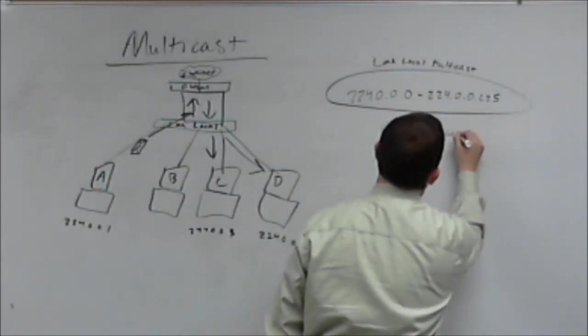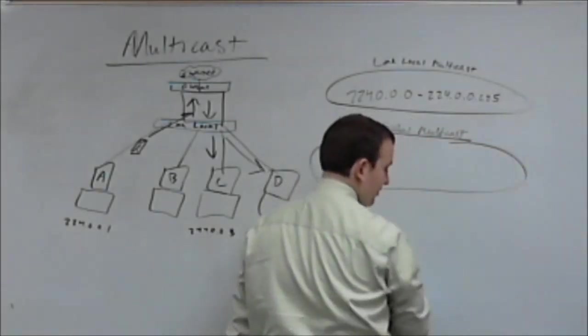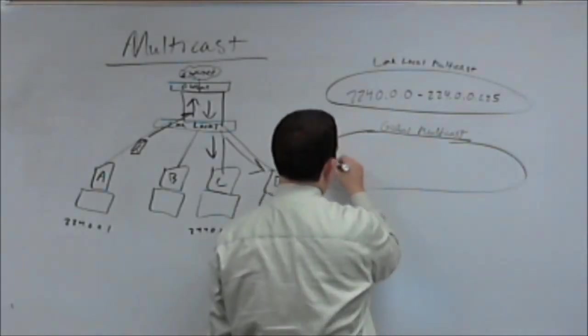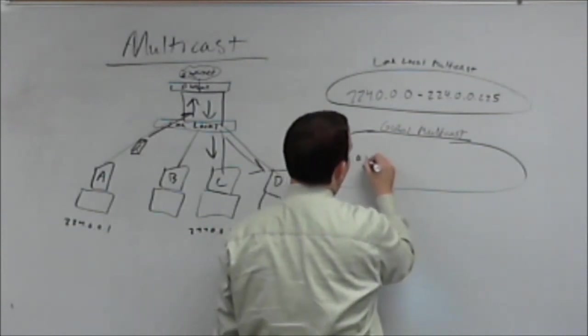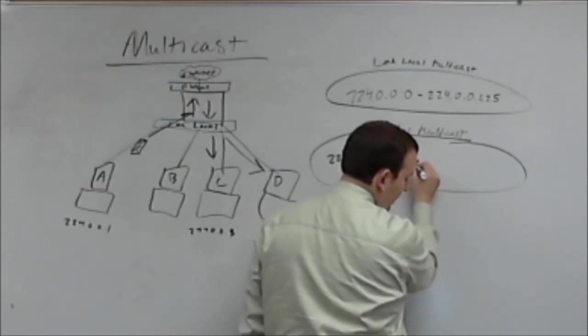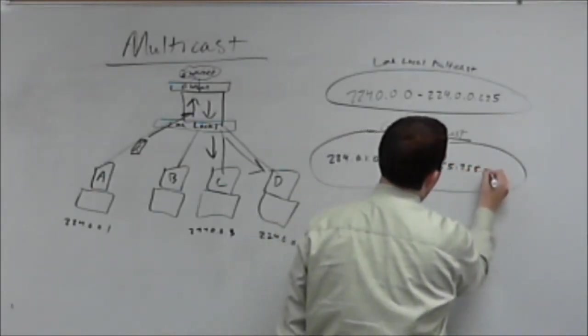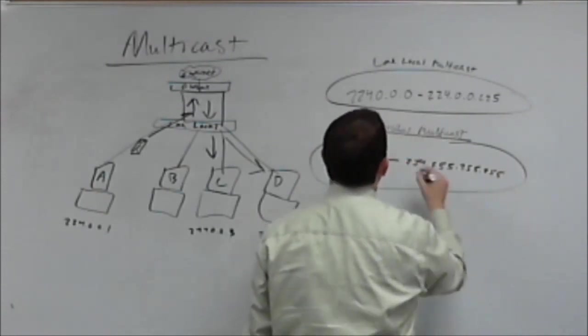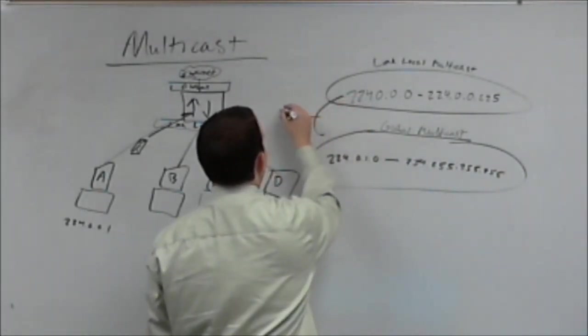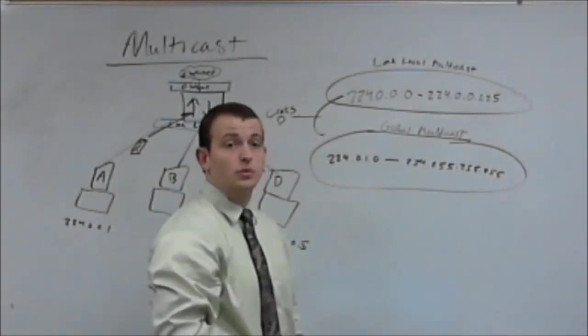Your global multicast range is going to span from 224.0.1.0 all the way up to 238.255.255.255. So these together make up class D addressing and classful addressing, which we'll get into next.